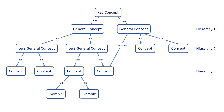Third, at the end comes the last layer which consists of examples. Fourth, create an initial concept map linking the concepts together. Remember to add linking words on the lines to demonstrate how the concepts are related. Fifth, add cross-links to connect concepts in different layers. Sixth, continually revise your concept map as needed.